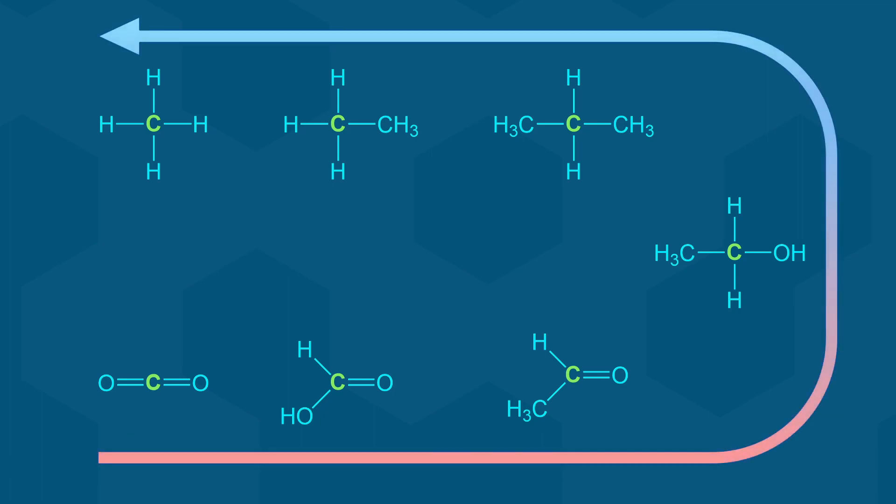On the flip side, notice that the more reduced forms of carbon have more bonds to hydrogens. In other words, if you observe a carbon gaining more bonds to oxygen during a reaction, it has been oxidized. Conversely, increasing the number of bonds to hydrogens means that the carbon has been reduced. This is the trend we will use here in Biology 112.